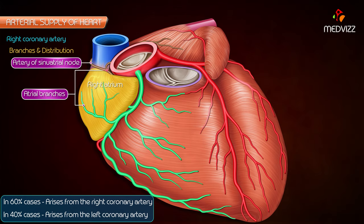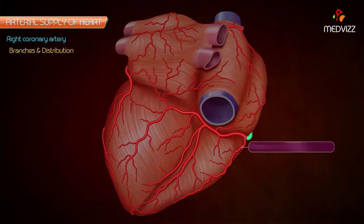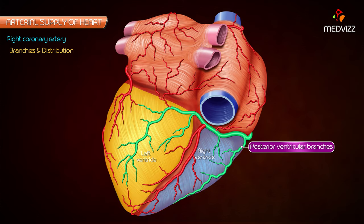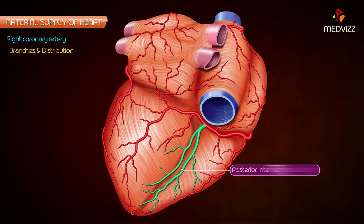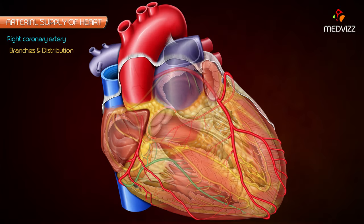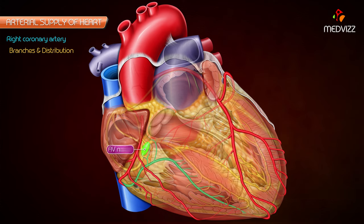In 40 percent of individuals, the SA node artery arises from the left coronary artery. Posterior ventricular branches — usually two — supply the diaphragmatic surface of the right and left ventricles. The posterior interventricular artery runs in the posterior interventricular groove up to the apex; it supplies the posterior part of the interventricular septum, the AV node in 60 percent of cases, and both right and left ventricles.